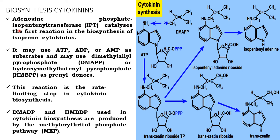Cytokinin biosynthesis: adenosine phosphate isopentenyl transferase catalyzes the first reaction in the biosynthesis of isoprene cytokinins. It may use ATP, ADP, or AMP as substrate and may use dimethylallyl pyrophosphate (DMAPP) or hydroxymethylbutenyl pyrophosphate (HMBPP) as prenyl donor. This reaction is the rate-limiting step in cytokinin biosynthesis. DMAPP and HMBPP used in cytokinin biosynthesis are produced by the methylerythritol phosphate pathway.